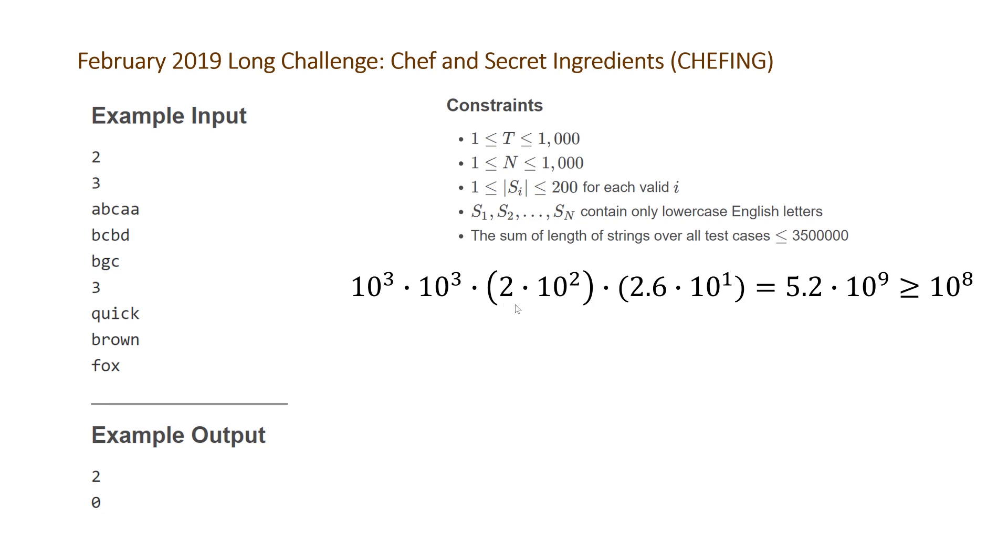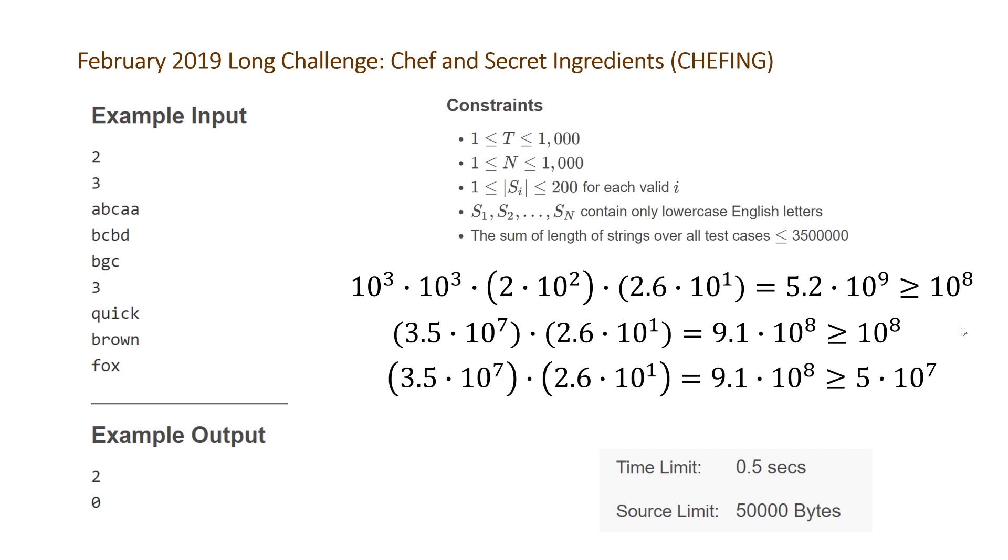We can replace t×n×s, the first three components, by 3.5×10^7. But that still, although it does reduce our total number, is going to be greater than 10^8. If you look at the details of the problem, we don't have a full second. We only have half a second, which means we have 5×10^7. At this point, it should become clear what we need to do. They have set the constraints so that it's only going to pass if we get rid of this element here, the 26.